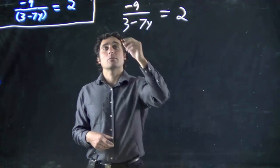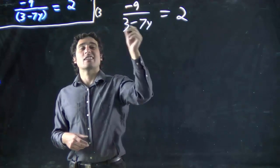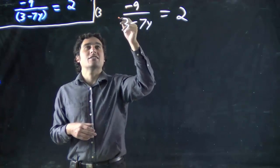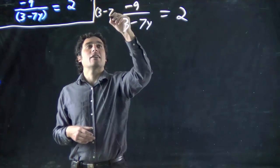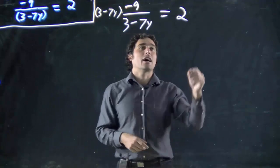So I'm actually going to multiply both sides, and this is where you need a bracket. That's why you could leave the bracket down there, it doesn't really matter. 3 minus 7y, 3 minus 7y. Multiplying both sides by that because that will cancel out that.